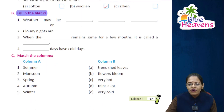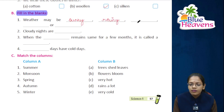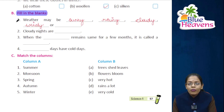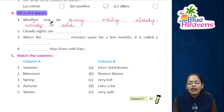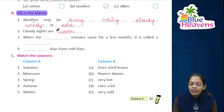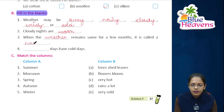Now students, let's do Exercise B — fill in the blanks. First blank: weather may be sunny, rainy, cloudy, windy, and cold. Second: cloudy nights are warm. Third: when the weather remains the same for a few months, it is called a season. Fourth: winter days have cold days.